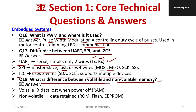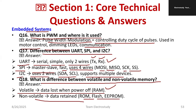What is the difference between volatile and non-volatile memory? Volatile memory loses data when power is off — for example, RAM. Non-volatile memory retains data even when power is turned off; once power is restored, the data is still there. Examples include ROM, Flash, and EPROM (Erasable Programmable Read-Only Memory).